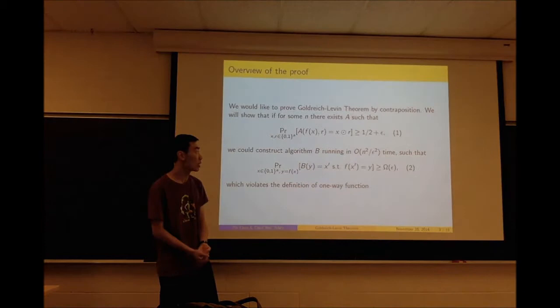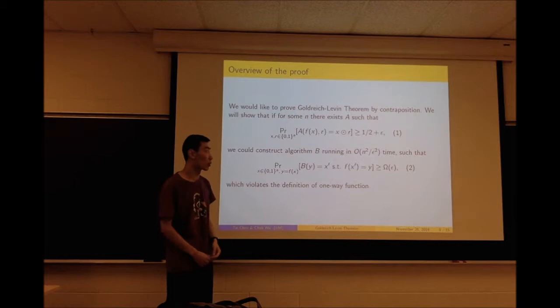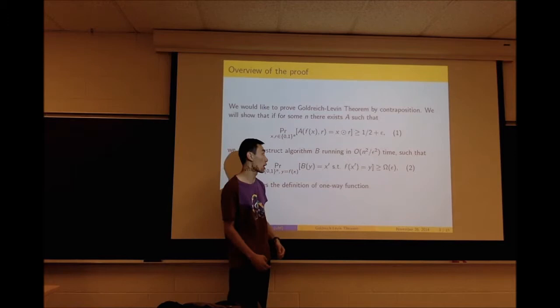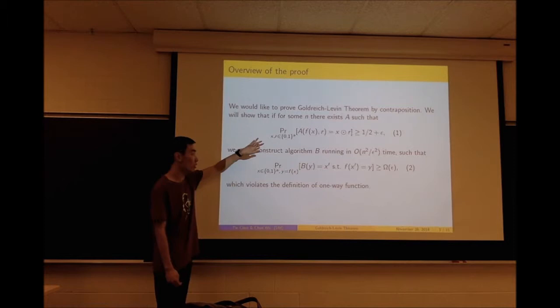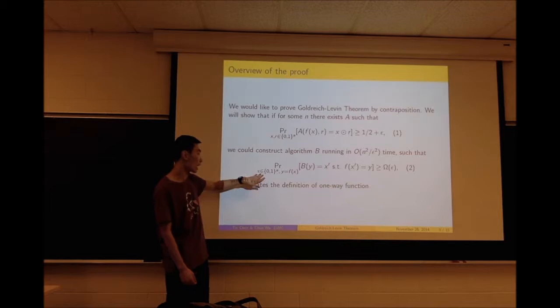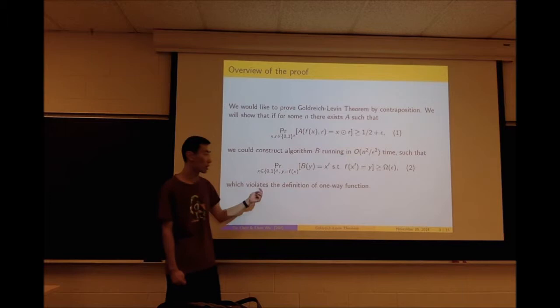Now I will give an overview of the proof. We would like to prove the theorem by contradiction. We will first assume there exists an algorithm A such that the probability over all x and r that A(f(x), r) equals x dot r is greater than or equal to 1/2 plus ε. Then, based on this assumption, we will construct another algorithm B which runs in O(n² / ε²) such that the probability over x, given y equals f(x), that B(y) outputs x′ with f(x′) equals y, is greater than or equal to ε.